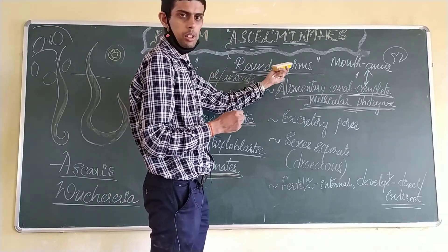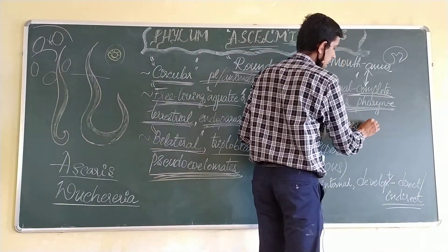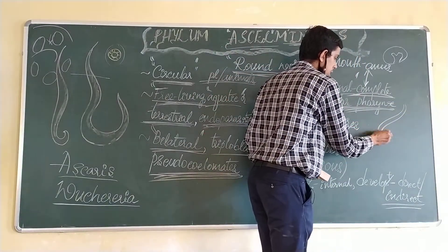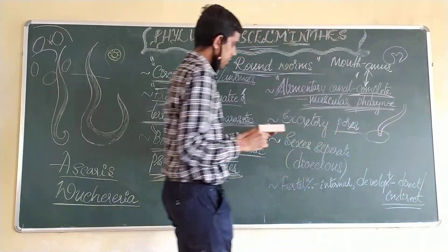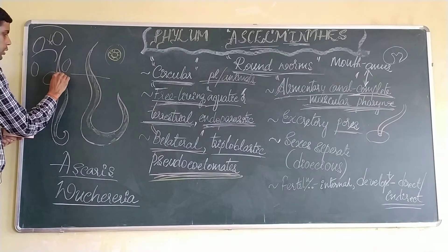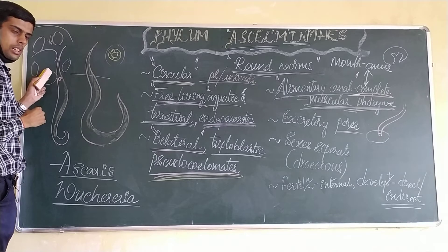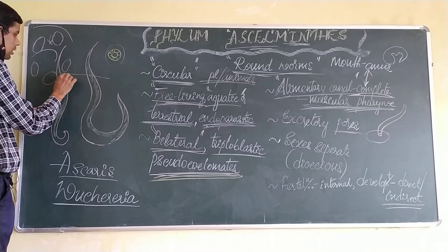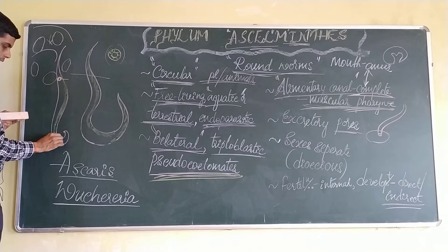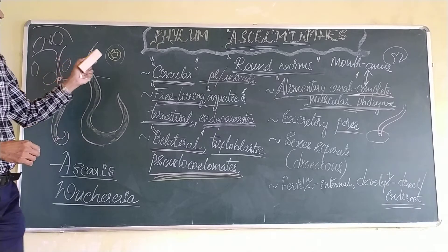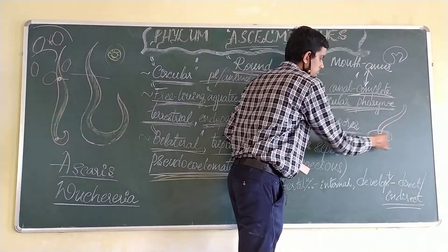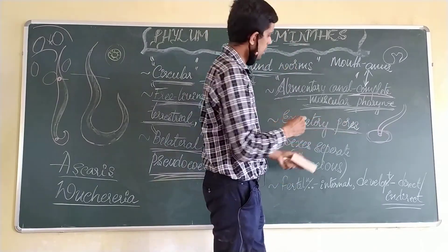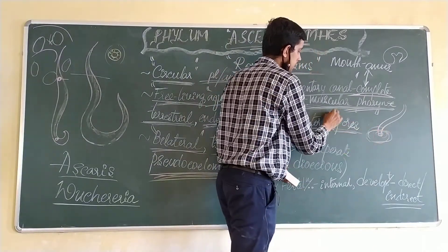Regarding the excretory system, the excretory wastes are expelled out through a tube which ends in a pore called the excretory pore. For example, in the diagram at the neck region you find a pump-like structure — that is the excretory pore. So excretory waste is sent out through a tube which ends in a hole called the excretory pore.